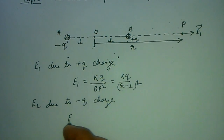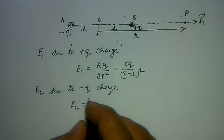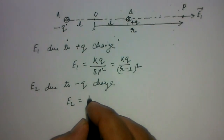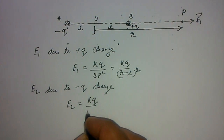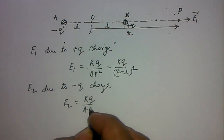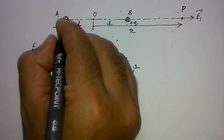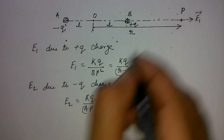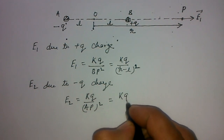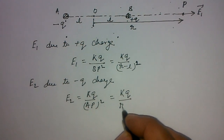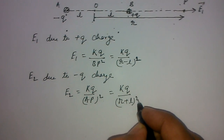Now E2, the field due to the negative charge minus Q: the magnitude of E2 equals KQ divided by AP squared. The distance AP is (R plus L), so E2 equals KQ upon (R plus L) whole square.